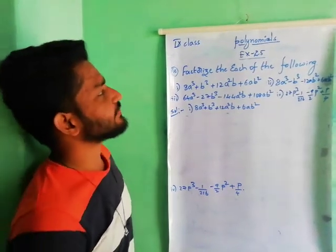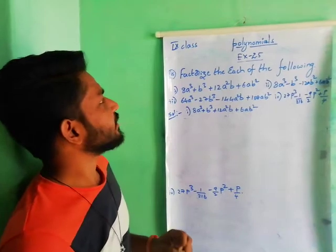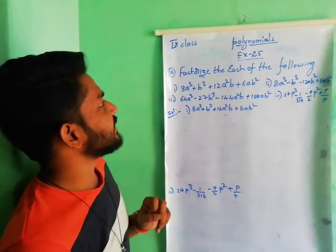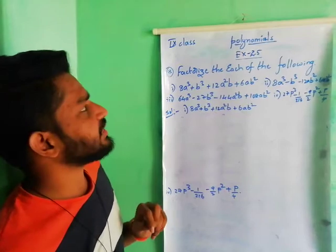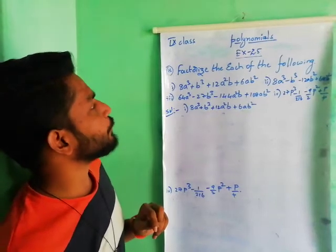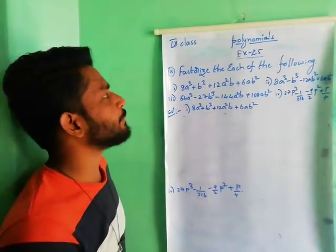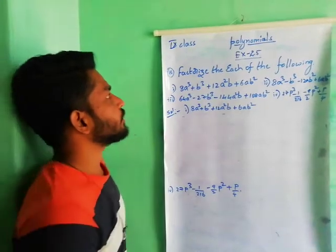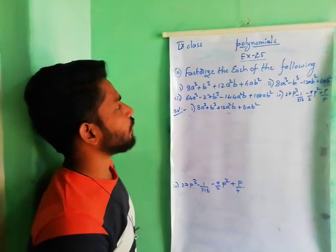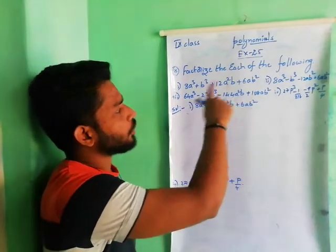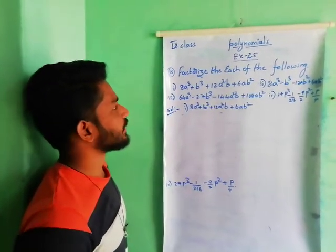Good morning students. Last video we discussed 6th and 7th problems in exercise number 2.5. In this video I am going to explain 8th and 9th problems in exercise number 2.5. So we have to factorize each of the following — there are 4 polynomial expressions.